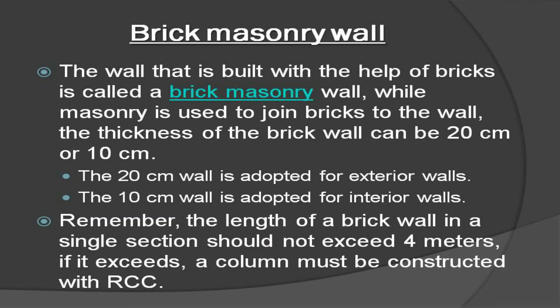Brick masonry wall: the wall that is built with the help of bricks is called a brick masonry wall, while masonry is used to join the bricks. The thickness of a brick wall can be 20 cm or 10 cm. The 20 cm wall is adopted for exterior walls and the 10 cm wall for interior walls. The length of a brick wall in a single section should not exceed 4 meters; if it exceeds, a column must be constructed with reinforced cement concrete.